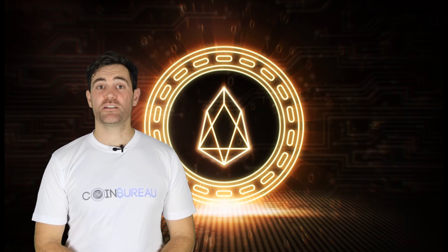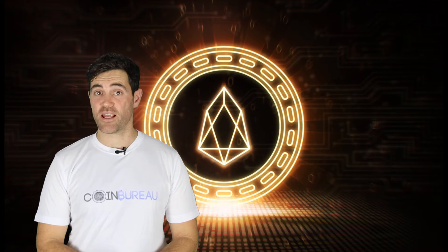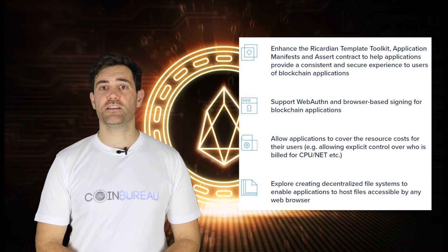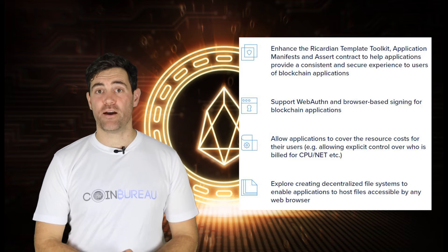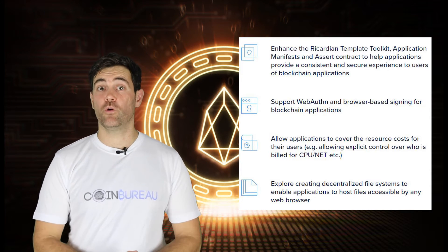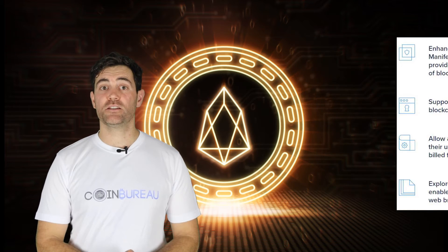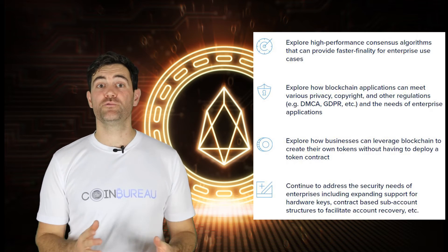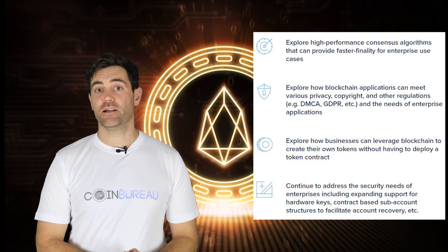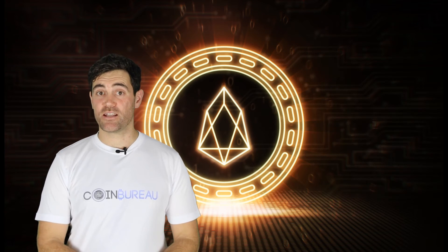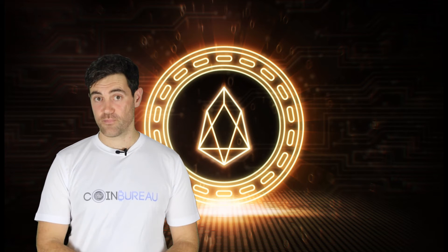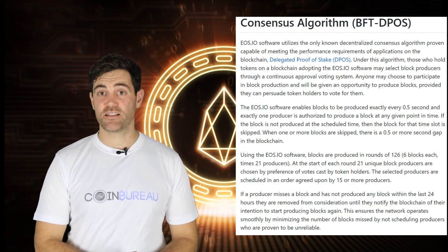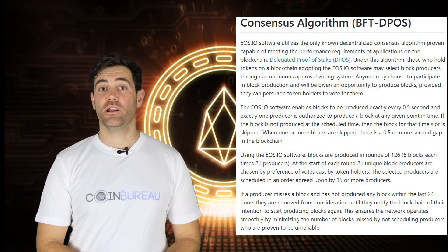Let's move on to the last two pieces of the EOS strategic vision: users and enterprise. EOS views users as an integral piece of its blockchain environment and is committed to using community feedback to improve on the current platform, creating an engaging and secure experience. Similarly, the project wants to meet the needs of enterprise users by creating high-performance consensus algorithms, providing tools to maintain regulatory compliance, and implementing enterprise-grade levels of security. EOS also uses a Delegated Proof of Stake consensus, or DPoS, to handle the transaction load and manage data.